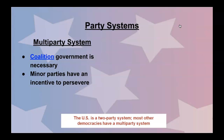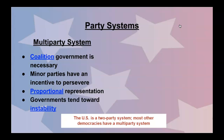What parties have an incentive to persevere in a multi-party system setup? Multi-party systems use proportional representation. For example, in the British government, if you are one of the many major parties, you vote, and in theory the results would reflect that in the makeup of the legislative body. However, governments tend toward instability in this type of situation. The more parties there are, the less likely things get done because you have to rely on consensus building to get anything passed.